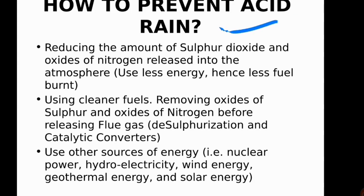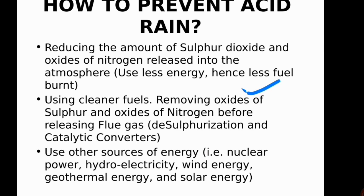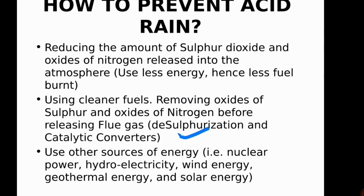To prevent acid rain, we can reduce the amount of sulfur dioxide and oxides of nitrogen by using less energy, meaning less fuel will be consumed. Using cleaner fuels and removing sulfur and nitrogen oxides is also helpful. Technologies like desulfurization reduce sulfur dioxide emissions, and catalytic converters help release fewer nitrogen and sulfur oxides. Alternative energy sources such as nuclear power, hydroelectricity, wind, solar, and geothermal energy can also prevent acid rain formation.